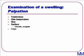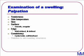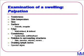We can then move on to assessing the edge. Is it well-defined or ill-defined? An ill-defined edge often suggests malignancy. We then think about the consistency of the swelling — is it cystic or solid? And if it's solid, is it soft, firm, or hard? Never forget the relationship of the swelling to the surrounding structures, which include skin, muscles, vessels, and many other structures. Then think about the draining lymph nodes and any special signs.